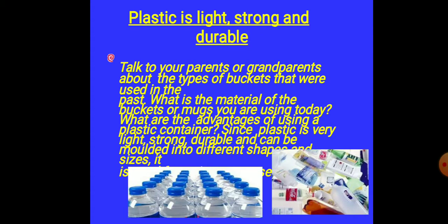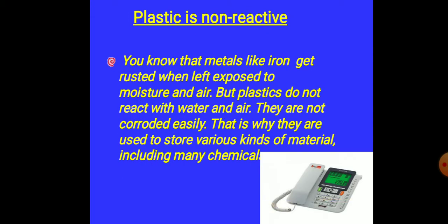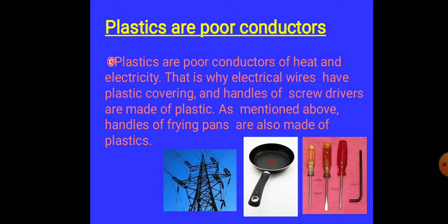As you have seen, there are so many uses of plastics because plastics are light, strong, and durable. You can talk to your parents and grandparents how they were using plastics in their time. Plastics are non-reactive also. Metals like iron get rusted when exposed to moisture and air, but these plastics are non-reactive. They will not get easily corroded.